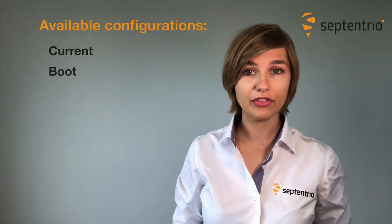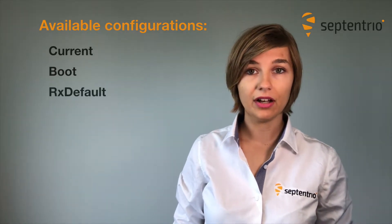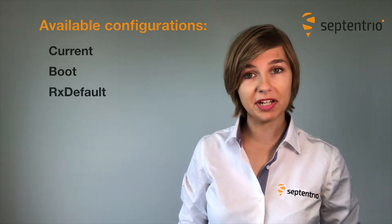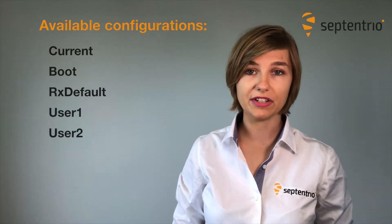A configuration file contains a list of user commands needed to bring the receiver from factory default to a certain non-default configuration. The following configuration files are available: the current configuration, the boot configuration which is loaded at boot time after a power cycle or after a hard reset, RxDefault which is the Septentrio default configuration, and two user-defined configurations.